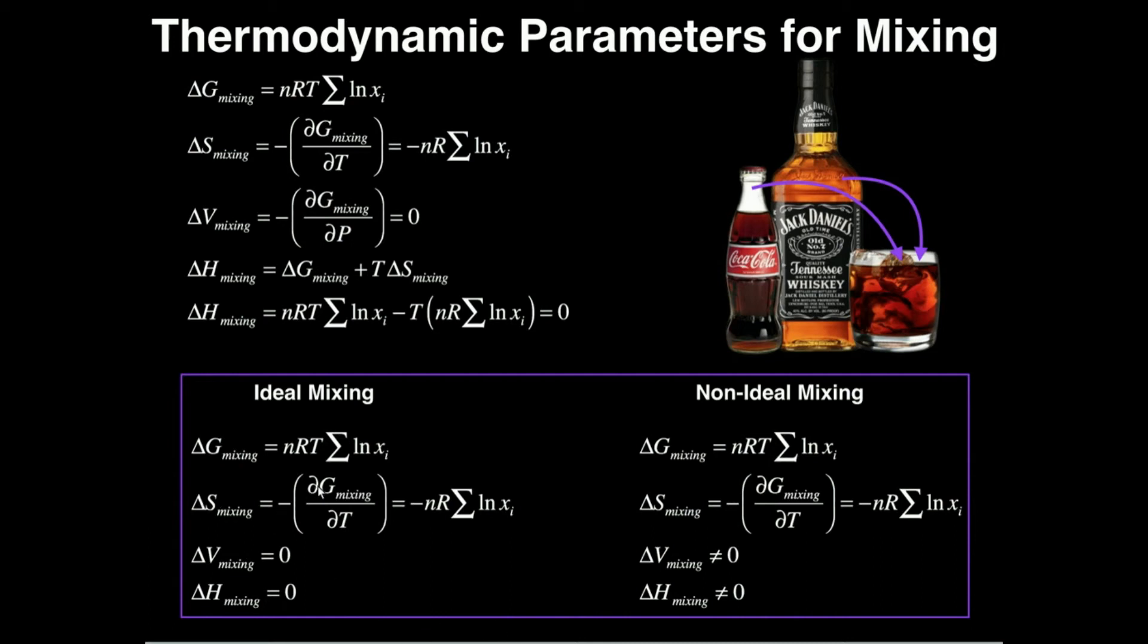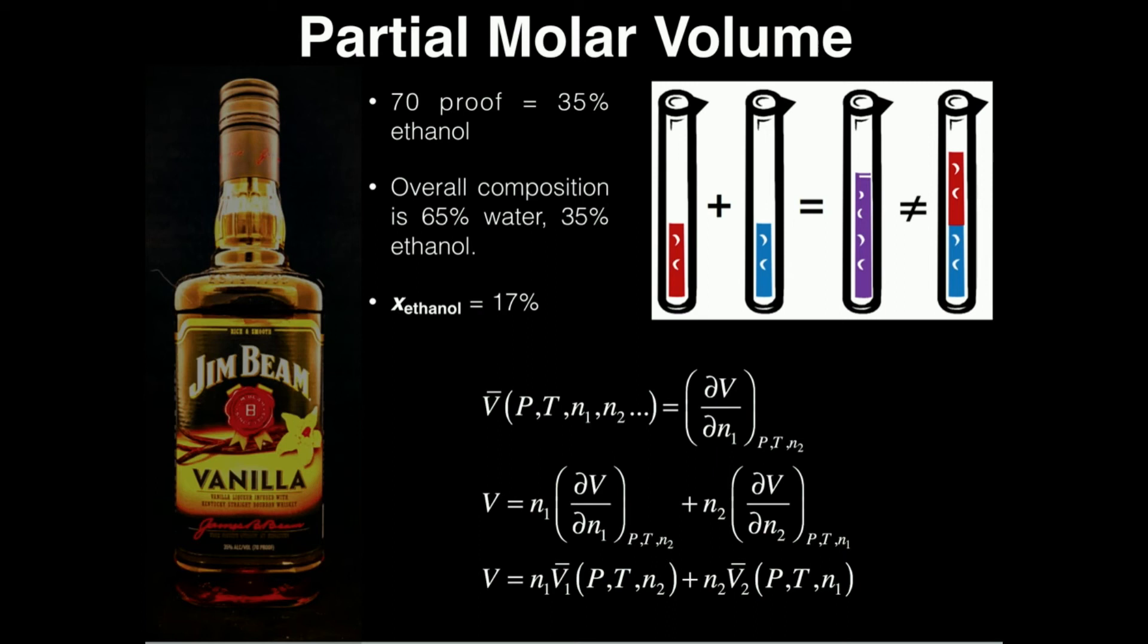In general, for a final comparison of ideal mixing versus non-ideal mixing, the delta G and delta S expressions—free energy and entropy—are the same regardless of what you're dealing with. Delta G is nRT times the sum of the natural logs of all the mole fractions in the mixture, and the entropy of mixing is the negative partial derivative of free energy of mixing with respect to temperature, which for an ideal solution is negative nR times this summation. But remember, for ideal mixing, delta V of mixing and delta H of mixing are both zero, but not necessarily when you have non-ideal mixing and non-ideal solutions. So in general, these are the thermodynamic parameters for mixing.